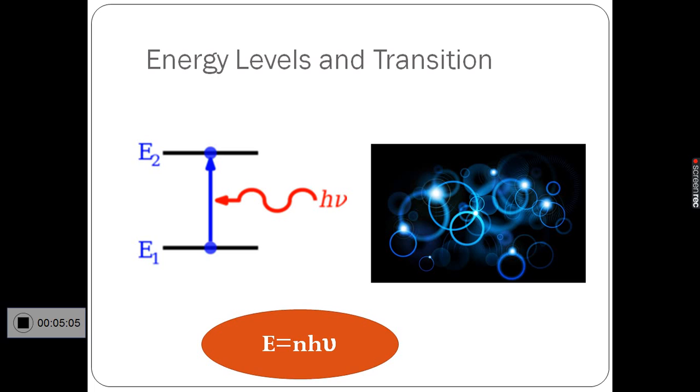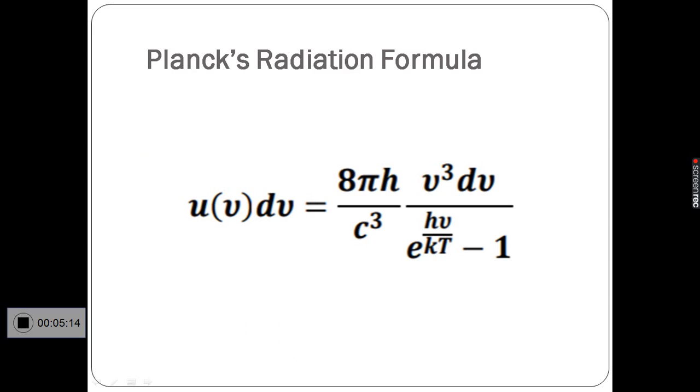According to Max Planck, the radiant energy E = nhν. Based on this assumption, Max Planck derived Planck's radiation formula.